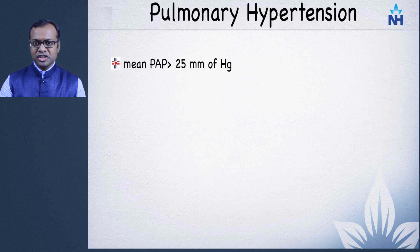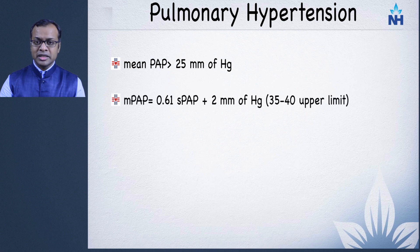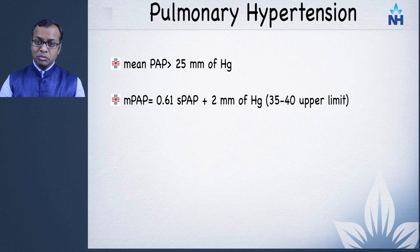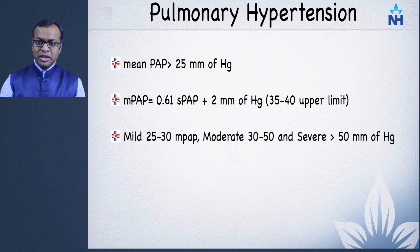Pulmonary hypertension is defined as a condition where the mean pulmonary arterial pressure is more than 25 mmHg. The mean pulmonary arterial pressure is not the same as the systolic pulmonary arterial pressure recorded in echocardiography — the systolic is usually about 10 mmHg more. A pressure up to 30 mmHg is considered mild, 30 to 50 is moderate, and more than 50 is severe.